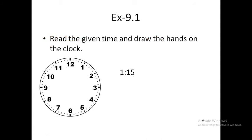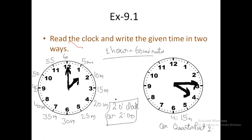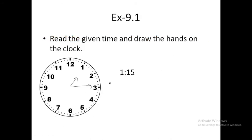Read the given time and draw the hands on the clock. 1:15 - 1 hour 15 minutes. So, the hour hand is at 1. And the minute hand is at 3, because 15 is 3 past. The time is 1 hour 15 minutes.